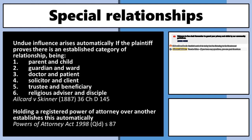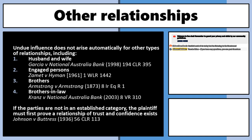That exhaustive list contains only about half a dozen categories. What about powerful relationships not on that list? Husband and wife, for example, is not there. In terms of undue influence, there are some other rules — like the rule in York and Jones — but the key point is that for relationships outside those exhaustive categories, you can still try to prove it under what we call class 2b.